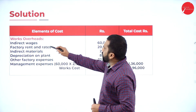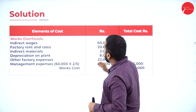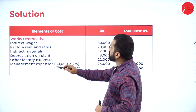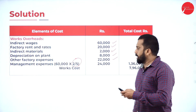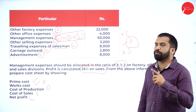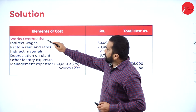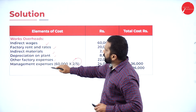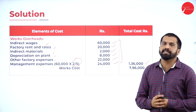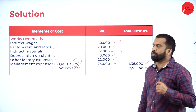After prime cost, go to work overhead. Under work overhead: indirect wages, factory rent and rates, indirect material, depreciation on plant, other factory expenses, and management expenses. For management expenses, the ratio is 2:1:2, so the total ratio is 5. Factory gets 2/5 of management expenses — that is 24,000. All factory items together give work overhead of 1 lakh 36,000. Adding to prime cost, work cost is 7 lakh 96,000.